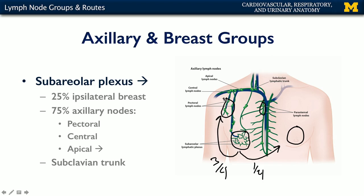From the pectoral nodes, material is going to move through the central nodes and then through the apical nodes, and then eventually coalesce into the subclavian trunk on its way to the duct. A physician, if they're going to do lymph node biopsies, will start with these pectoral lymph nodes.